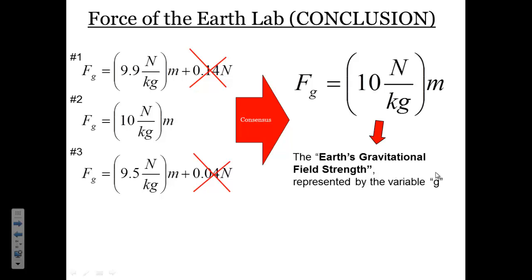This value is called the Earth's gravitational field strength. It represents exactly how much force a single kilogram of mass will feel. And we can represent that with the variable g, which stands for gravitational field strength. And so in our equation, we can replace the slope with that lowercase g. And so we get the force of gravity is equal to the gravitational field strength times the mass.